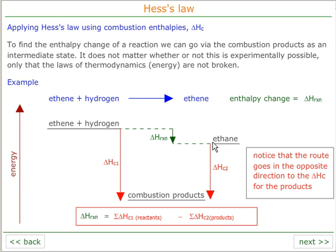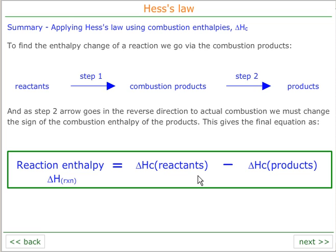If you go the opposite direction to an arrow, you must subtract it rather than add it. So in this particular case, our delta H reaction is equal to delta HC1 minus delta HC2. From this we can get a general form for combustion enthalpy: as we're going from reactants to the combustion products, and against the combustion enthalpy to the products, it's delta HC reactants minus delta HC products.